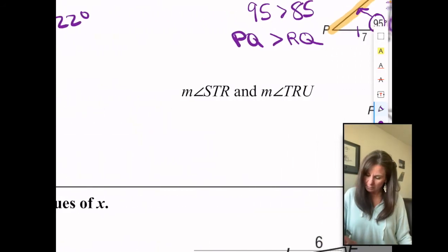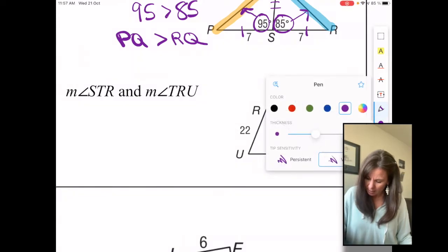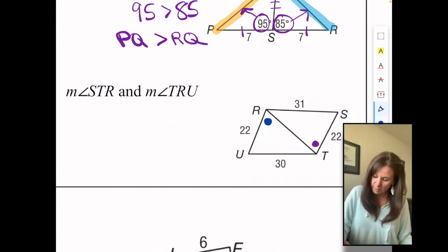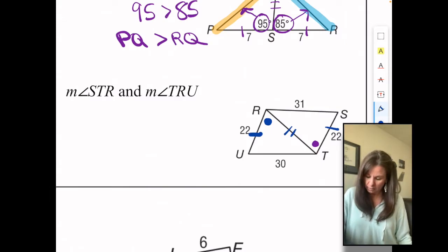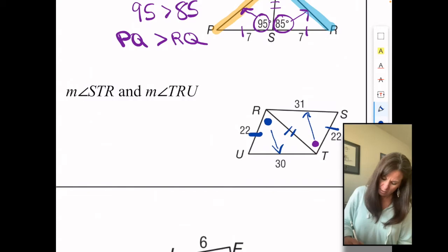One more of these. Measure of angle STR and the measure of angle TRU. STR, that's that guy. And the measure of TRU, that's that guy. So we do have corresponding sides. Look at 22 and the one that they share. Now we can look across. So R goes to 30, T goes to 31, which means angle STR is greater than angle TRU.